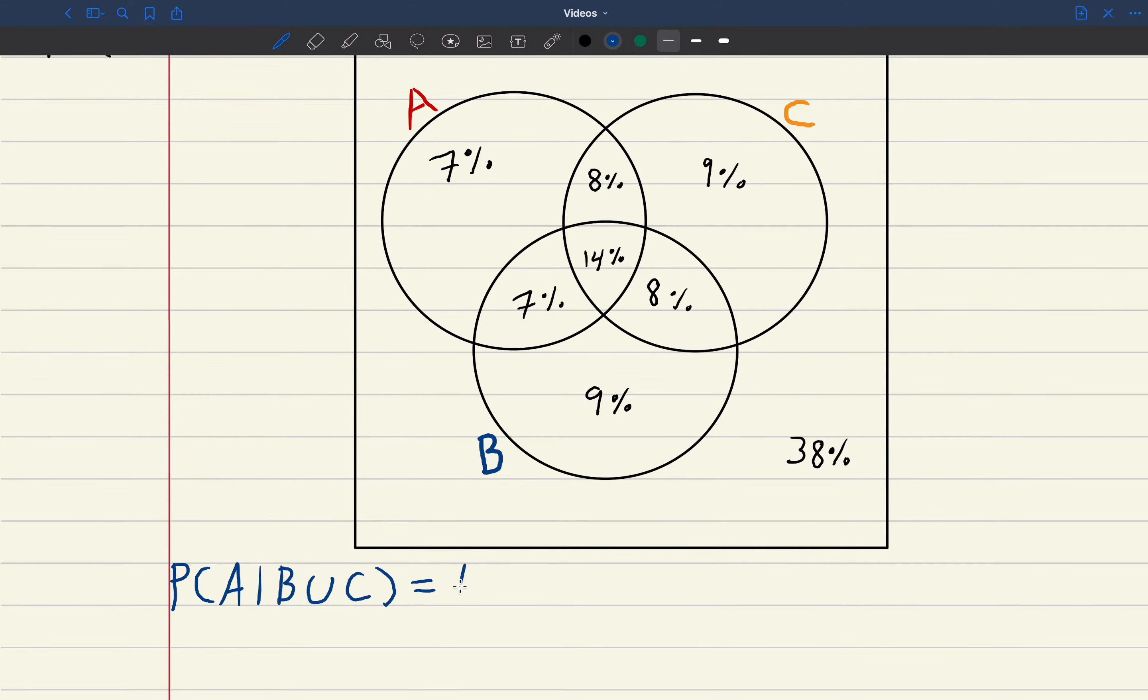If I rewrite that in terms of that formula that I showed, that would be A and B or C divided by the probability of B or C.